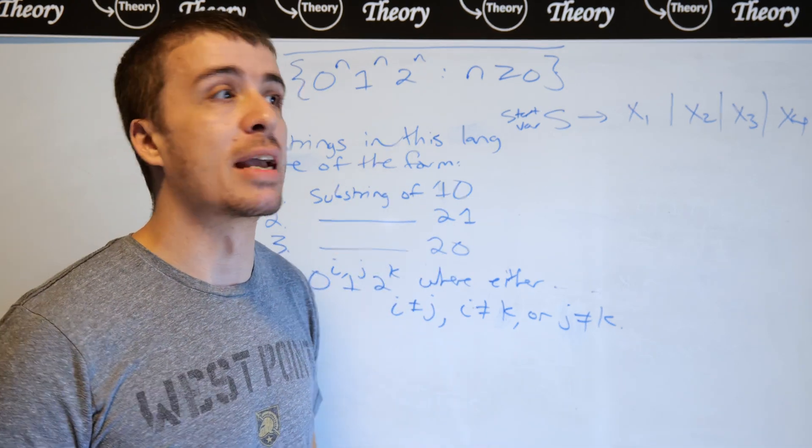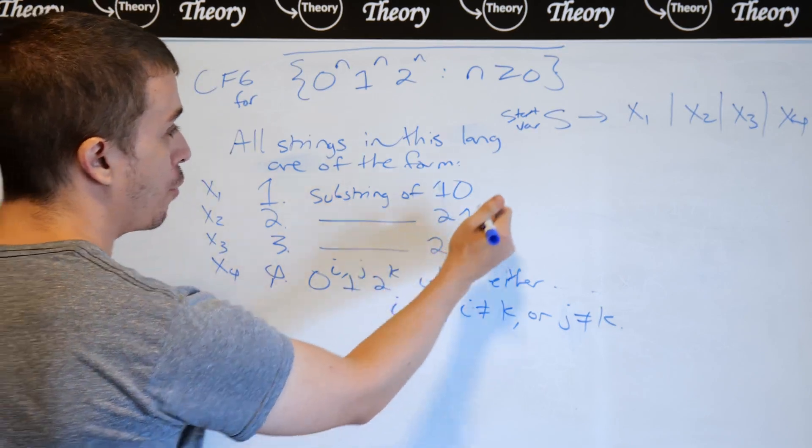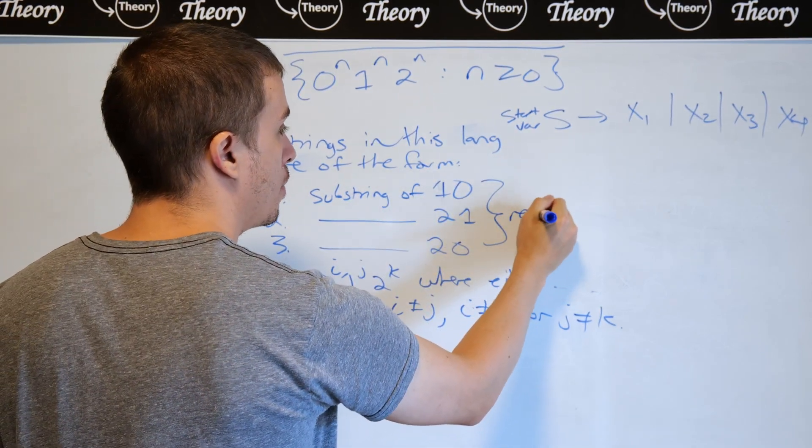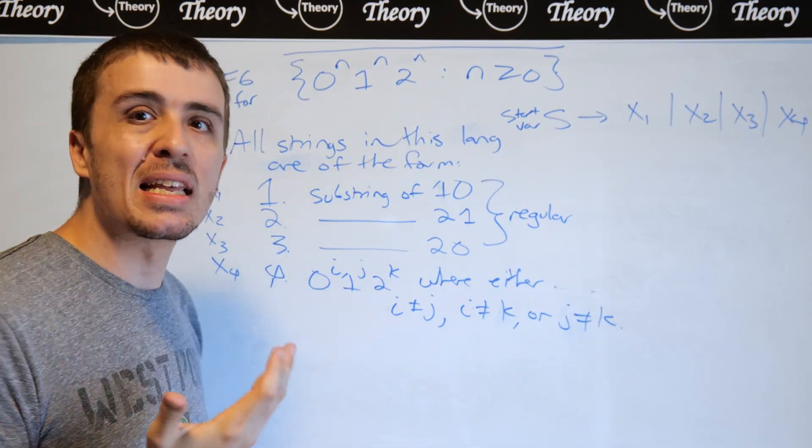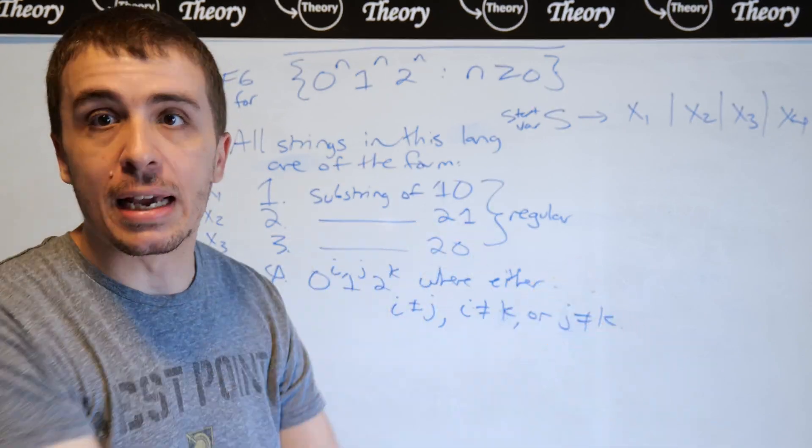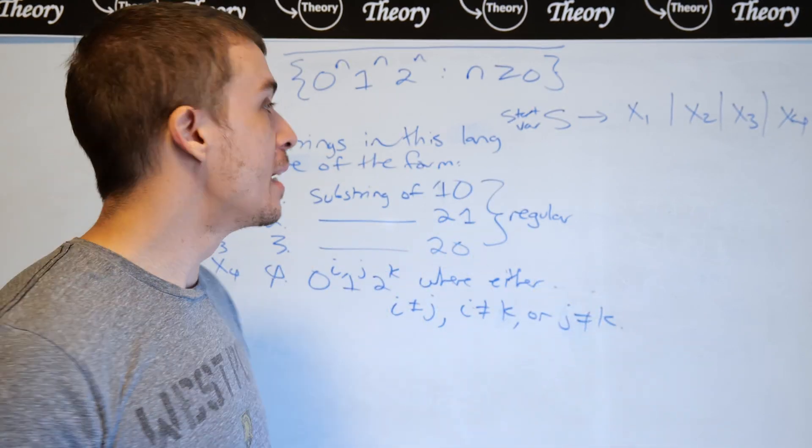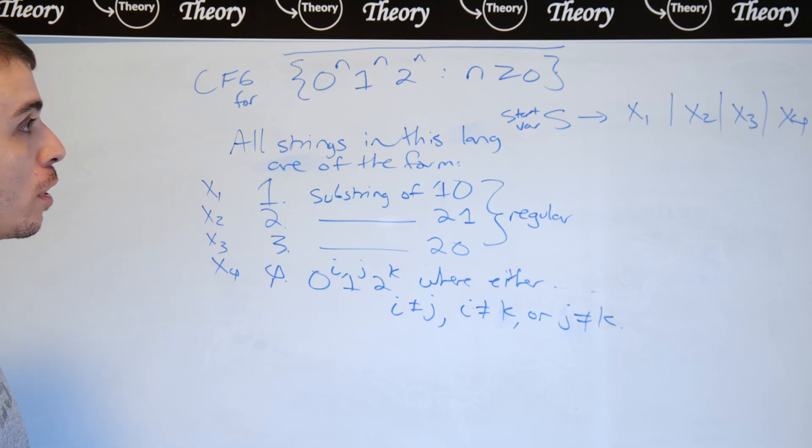So all three of these right here are regular, and you can easily make a DFA and therefore a context-free grammar for each of these three. What I want to show you is 4.